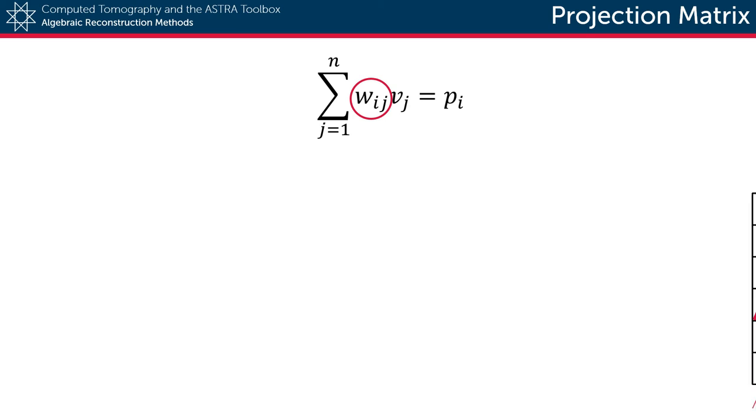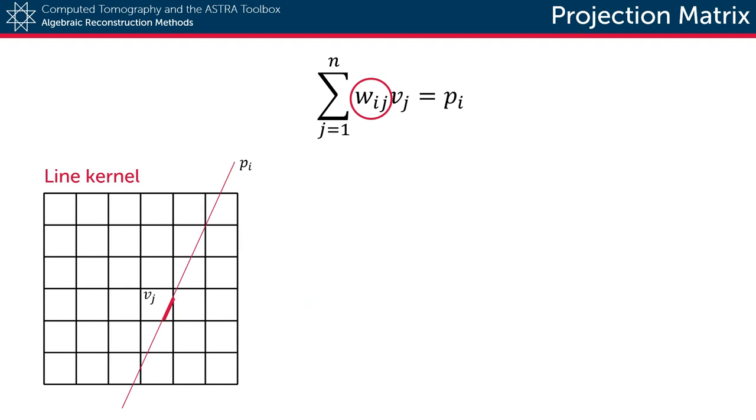In the first option, the projection weight is defined by the length that the ray i traverses through the voxel j. And we call this the line projection kernel. This is a reasonably accurate and reasonably efficient method.